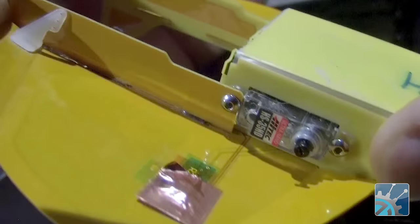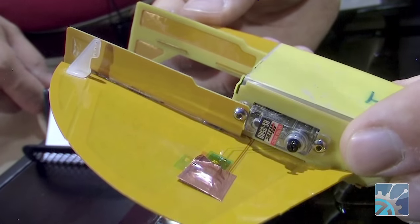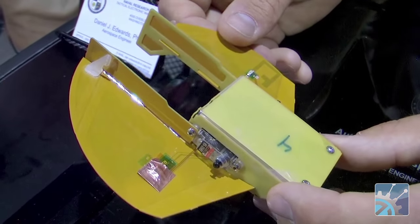You have a servo that drives an elevon flap for control. In the same way, elevator and ailerons are controlled by the same surfaces, so you have roll and pitch, which again is all you really need to fly an airplane.